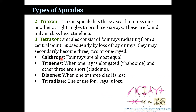The first sub-type of triaxon is calthrop, where four rays are present and nearly equal. In triaenes, one ray is elongated and is known as the rhabdom, while the shorter rays are known as cladi. When one of the three cladi is lost, it is known as a diany. When one of the four rays is lost, it is known as a triradiates.